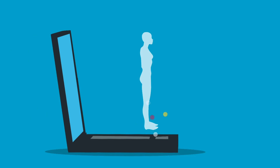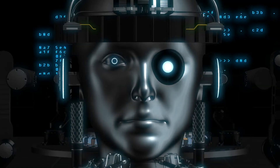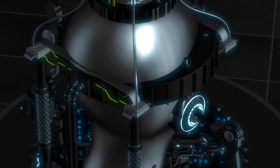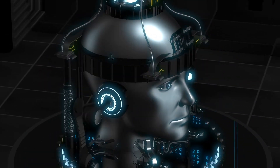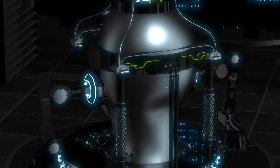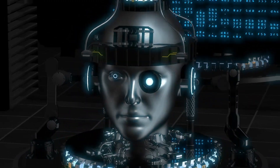Machine learning has become extremely popular in recent years and has been used in a wide range of problems, but the biggest impact it has had is in natural language processing, image recognition, and fraud detection. Machine learning is a subset of artificial intelligence that involves the development of algorithms and statistical models that enable computers to learn from data, automatically, without being explicitly programmed.